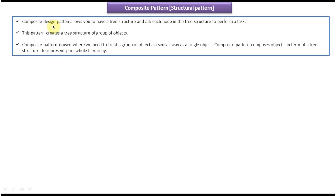Composite design pattern allows you to have a tree structure and ask each node in the tree structure to perform a task. This pattern creates a tree structure of a group of objects. Composite pattern is used where we need to treat a group of objects in a similar way as a single object. Composite pattern composes objects in terms of a tree structure to represent part-whole hierarchy.